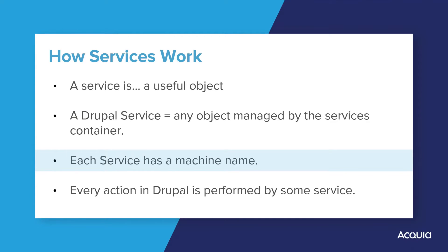When you need to get access to a service so you can use it to do some work for you — say the email validator — you just say: "Dear services container, can I please get the service by the name of email.validator?" Easy peasy.